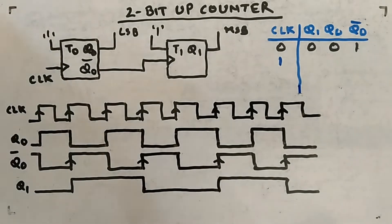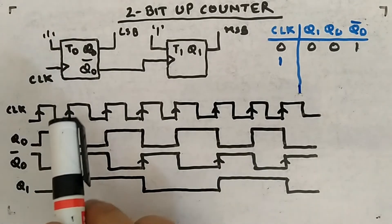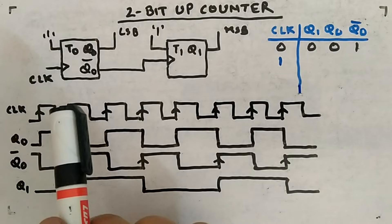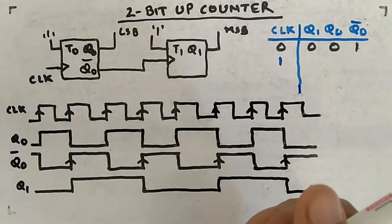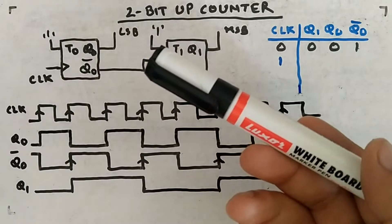Now before going to 3-bit counters, let me give you another perspective of 2-bit counters. We'll see 2-bit up and down counter both, but there is a slight change. This time I am changing the clock. Previously the clocks were negative edge triggered. Now let's see what will happen if you keep positive edge triggered clocks. Your flip-flops will be positive edge triggered now.